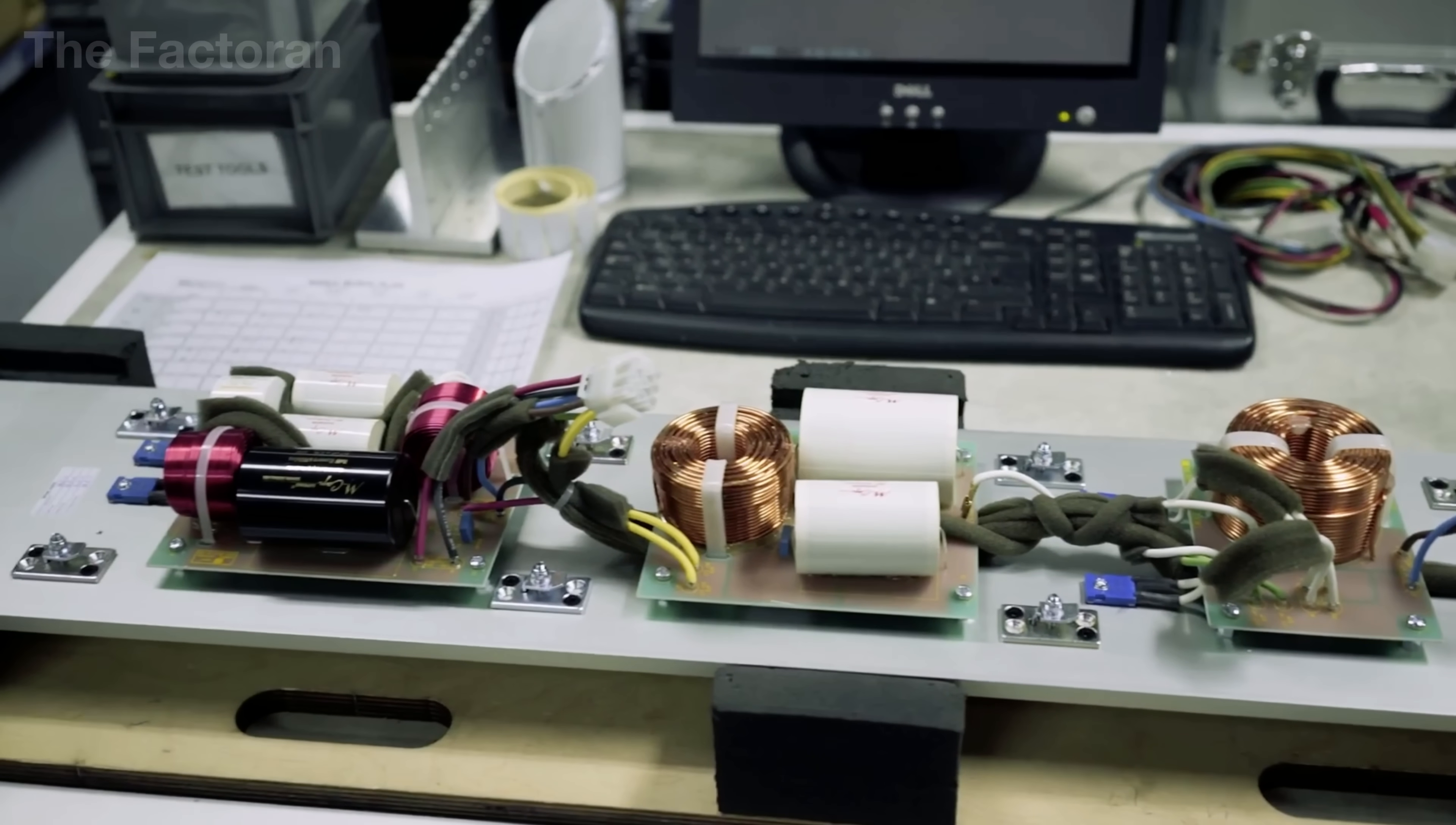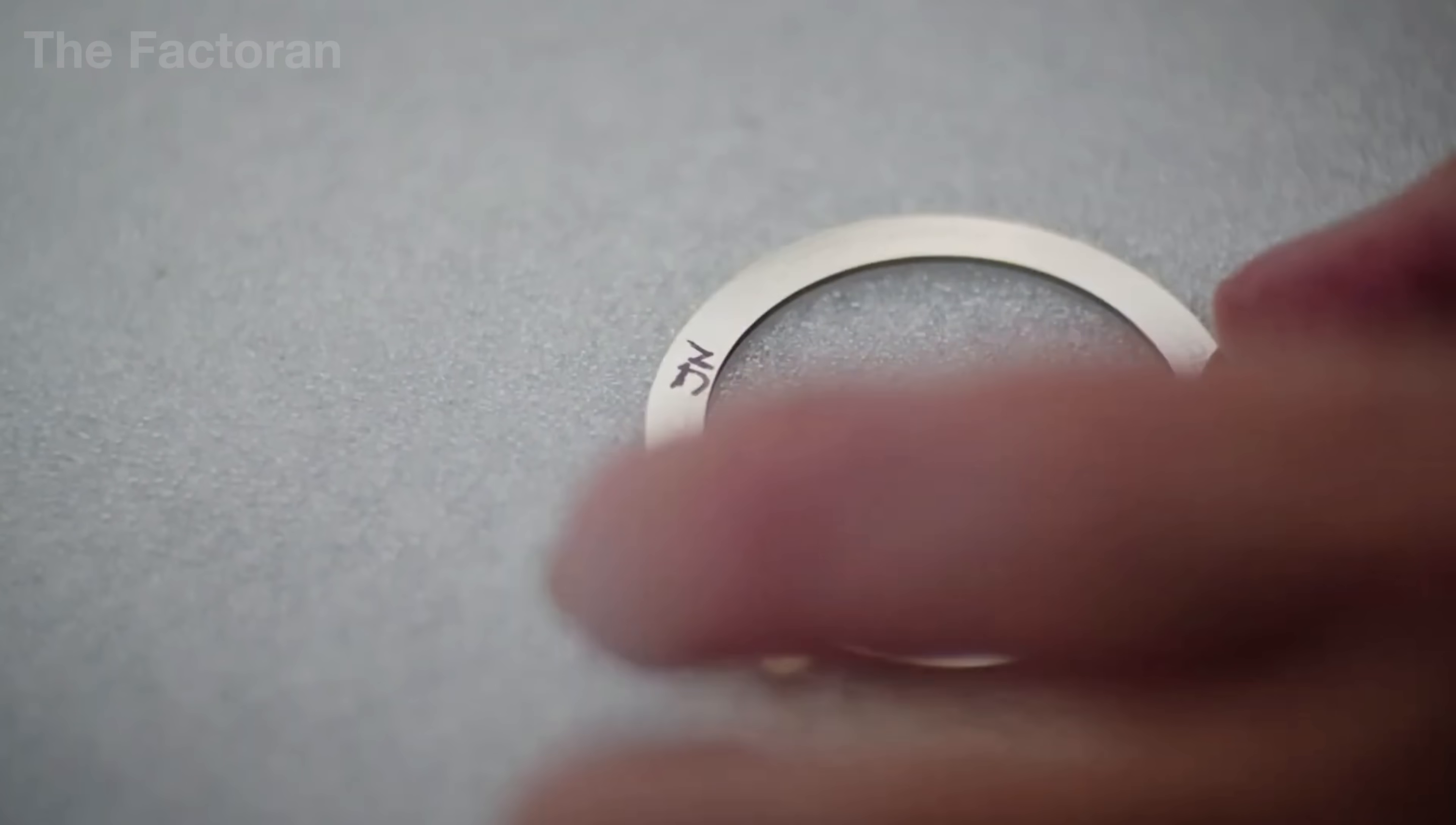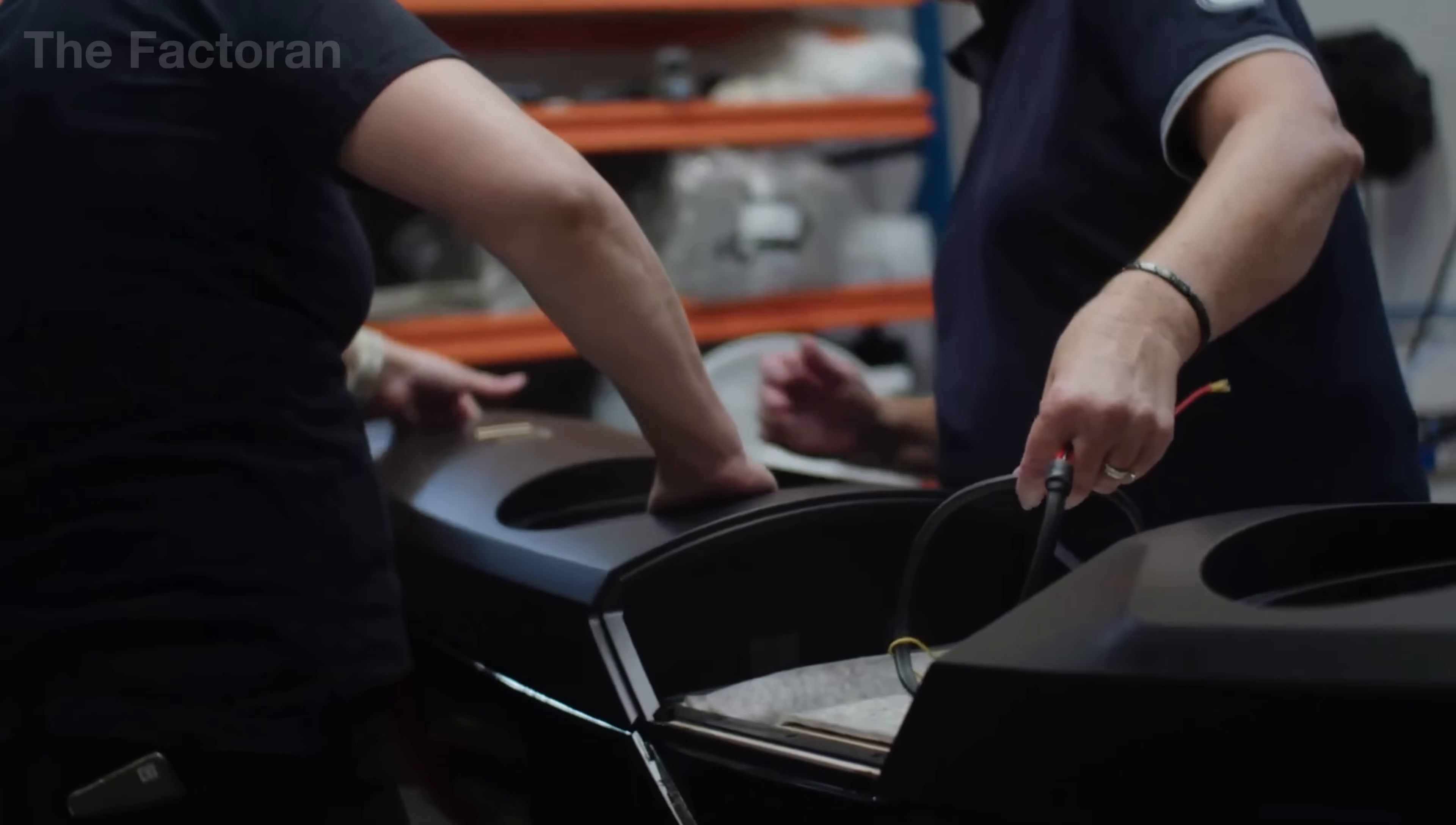Once the wiring and crossover network are fully connected, the cabinet undergoes structural inspection. Panel air tightness, port alignment, and mechanical rigidity are verified one by one. A deviation as small as a millimeter can alter frequency balance, so precision is absolute.